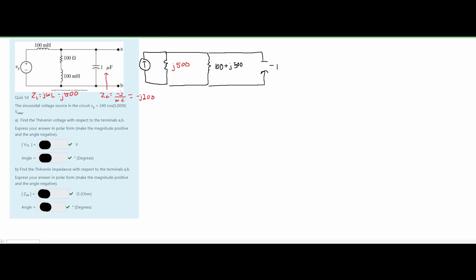The capacitor becomes −j200, and then we have terminals A and B. We still need to find the current. Our current equals voltage divided by resistance, specifically V_max over the impedance. However, we have a Vrms value, not V_max. So we use V_rms = V_max / √2, rearranged to V_max = √2 × V_rms = √2 × 240.